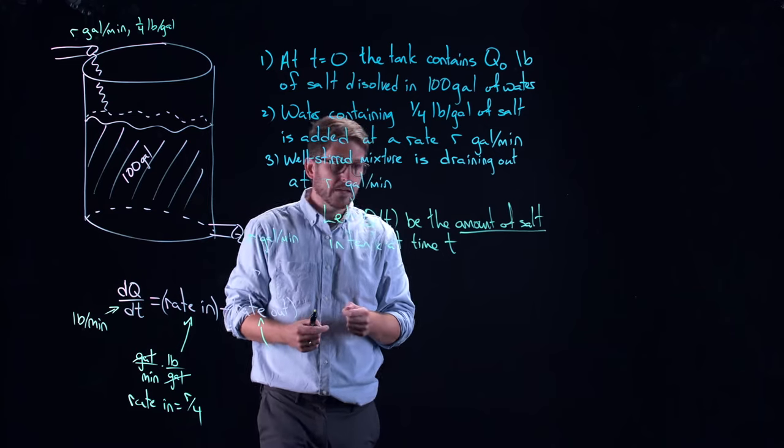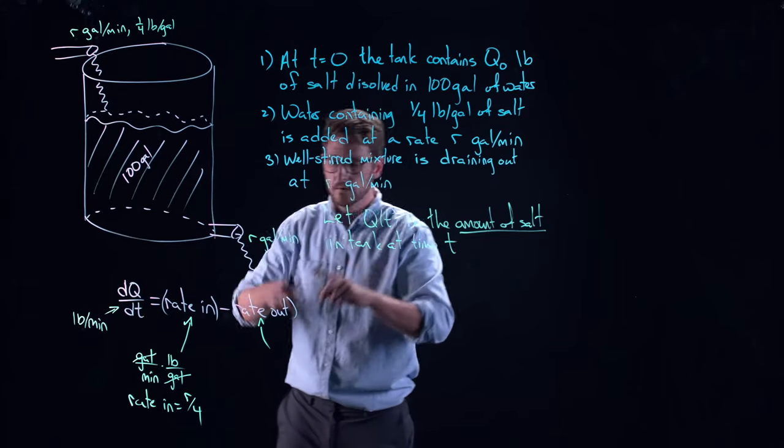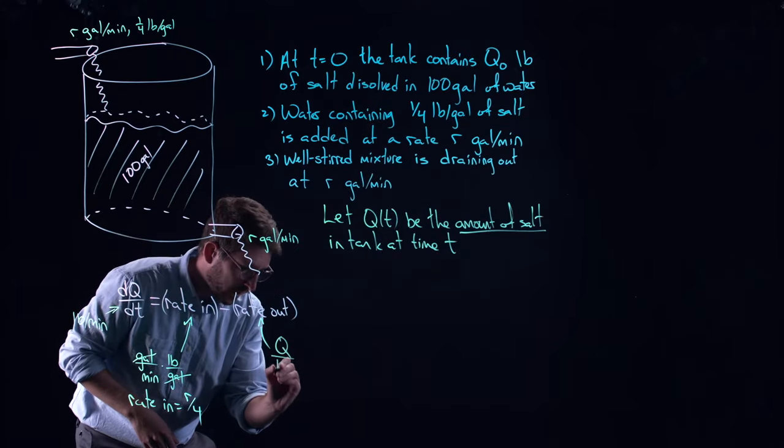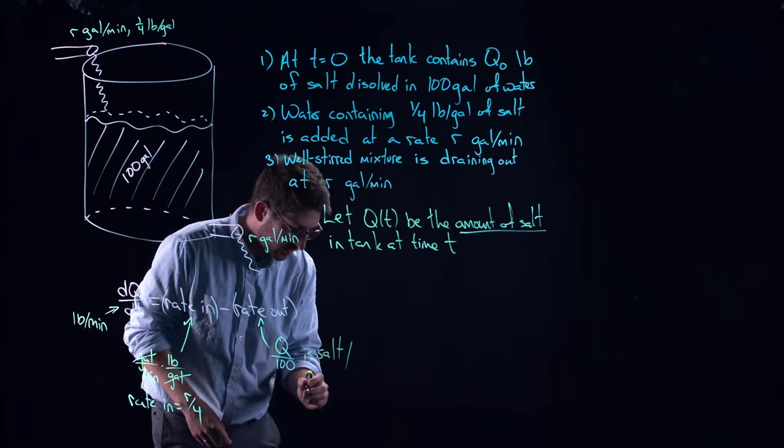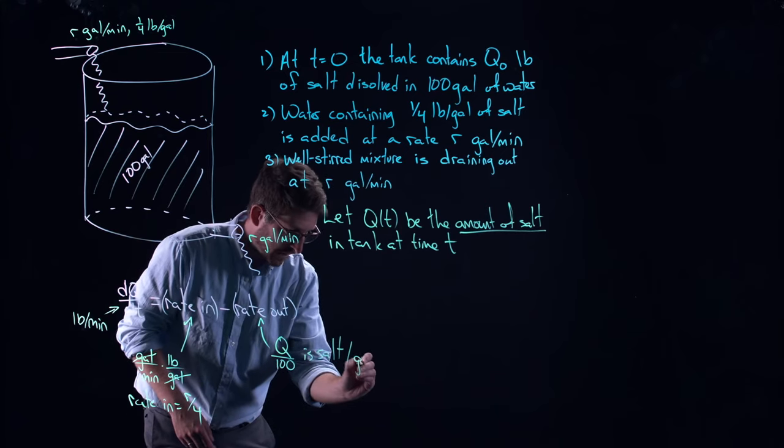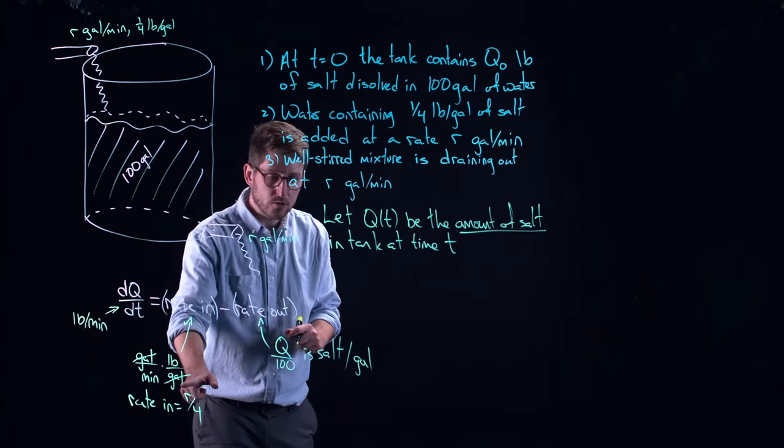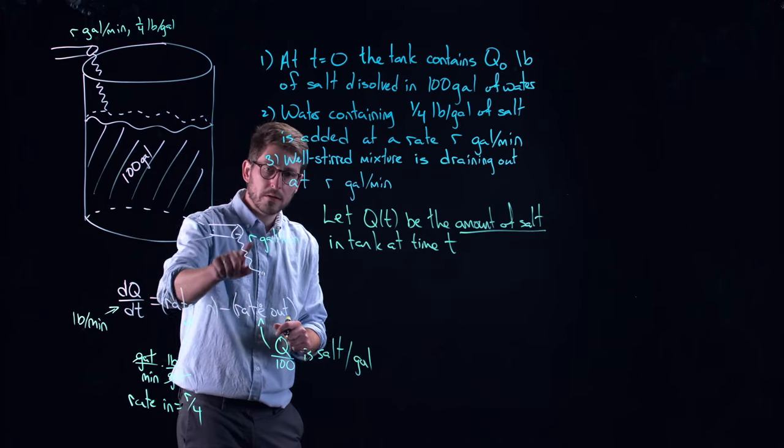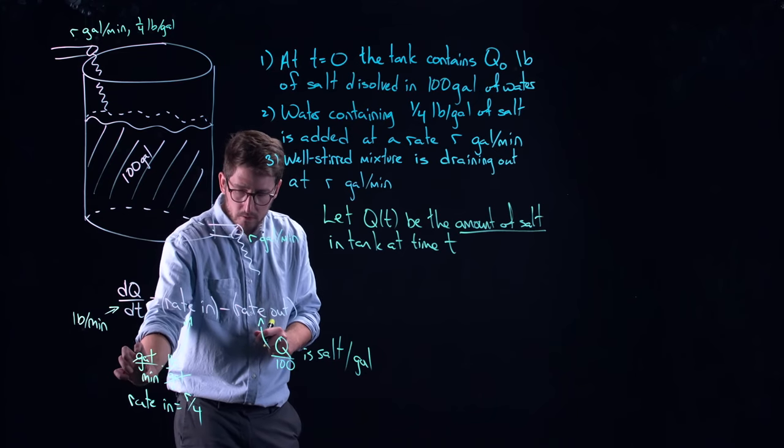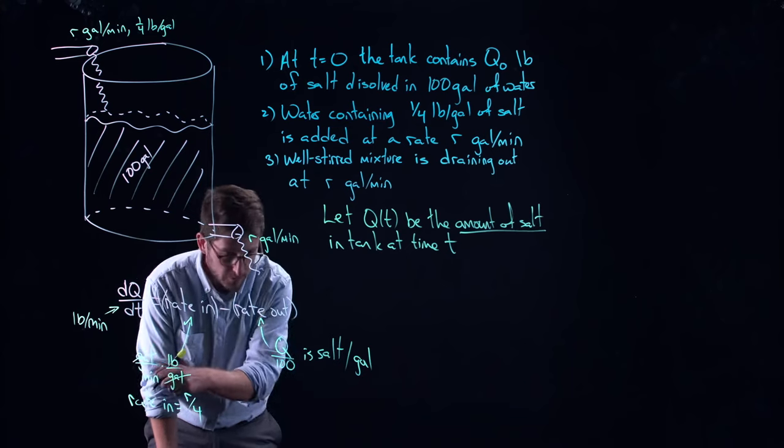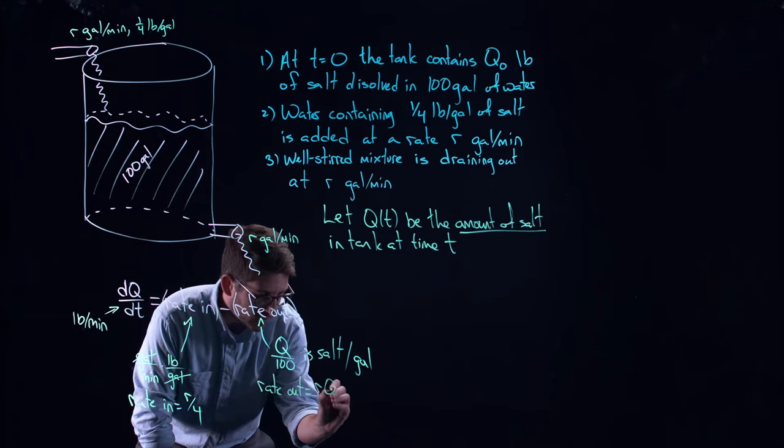That tells you that if you have Q pounds of salt inside of this entire hundred gallons, then Q over a hundred is pounds of salt per gallon. Now I'm in a pounds per gallon situation and we know that it's going out at exactly the same rate. So now that I've got pounds per gallon and I already knew that gallons per minute is the rate, is R. This tells me that the rate out is equal to RQ over a hundred.